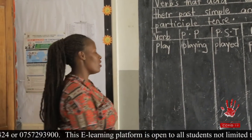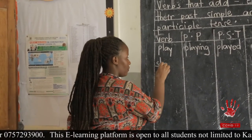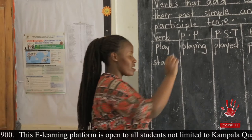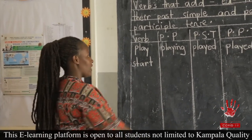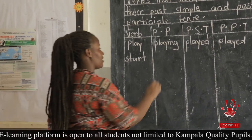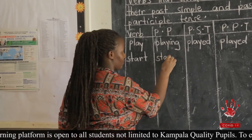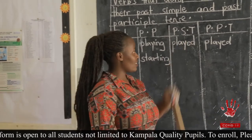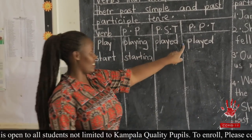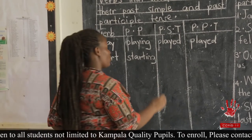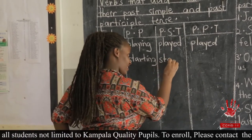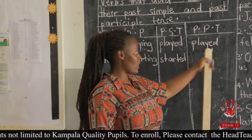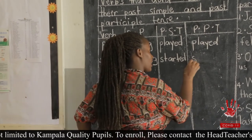The second example is 'start.' When we change it to the present participle, we simply add ING without removing any letters, and it becomes 'starting.' In the past simple tense, by adding ED to the main verb, it becomes 'started.' The same applies to the past participle — it also becomes 'started.'